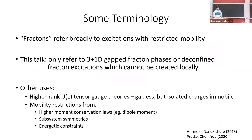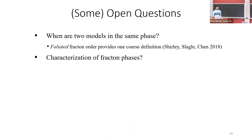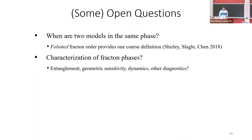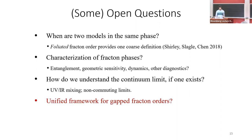Let me fix some terminology. If you run across a condensed matter paper with the word 'fracton,' it doesn't necessarily mean they're talking about what I'm discussing today. Today, fractons are a go-to term for any excitations with restricted mobility. But I will only be talking about the 3+1D gapped fracton phases where there is topological degeneracy. There are lots of open questions about fractons: we don't even fully understand when two different fracton models are in the same phase, how to characterize these systems in terms of braiding and fusion, their entanglement properties, or whether a continuum limit always exists.